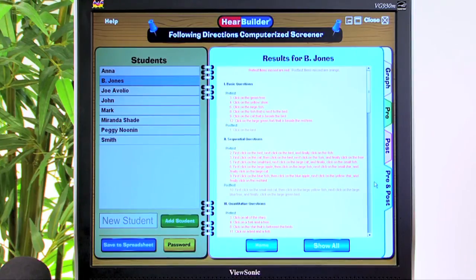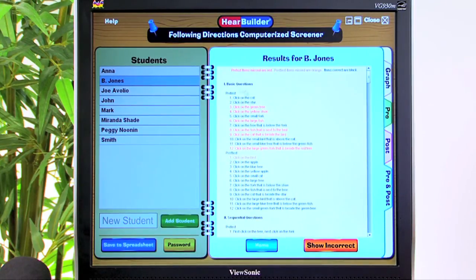And of course, if we want to see all of the responses, we can simply click the Show All button. This will have the items on the pretest that were missed in red, the items that were missed on the posttest indicated in orange text, and then of course all of the correct items are listed there with the black text.